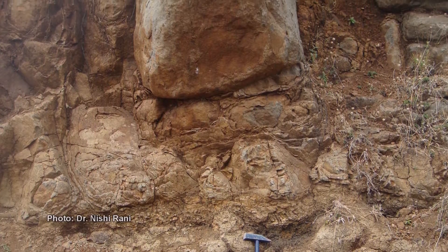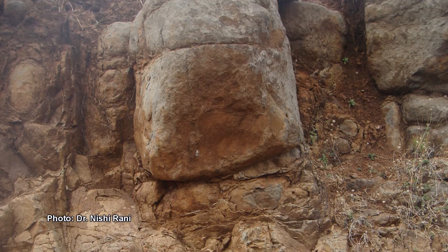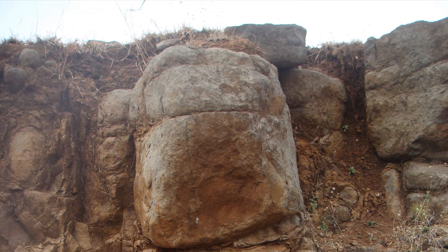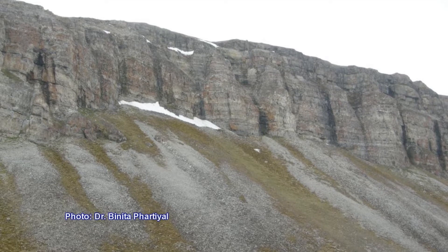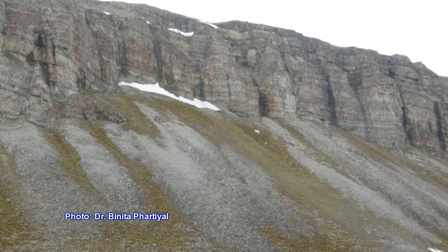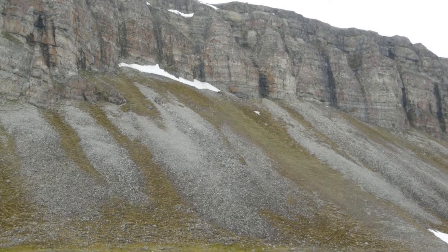Immature soil is not fully developed — the upper layers have been removed and the rocks below are exposed, after which weathering forms new soil from the exposed rock. This happens when there is not enough time for layers to form, or when soil formed is transported away from its place. For example, in glacial erosion the upper layers of soil are removed, leaving an immature soil.